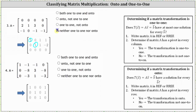For the last example, again looking at the matrix in reduced row echelon form, we have pivots in row one column one, row two column two, and row three column three. We don't have pivots in every column, and therefore the multiplication is not one-to-one. However, we do have pivots in every row, and therefore the multiplication is onto. We select onto, not one-to-one.